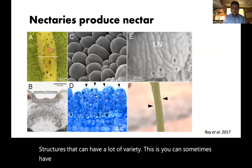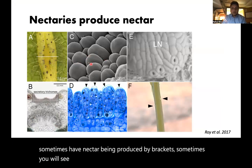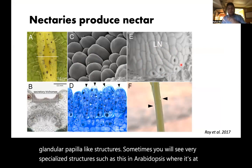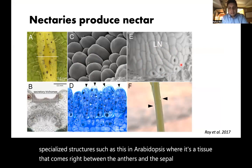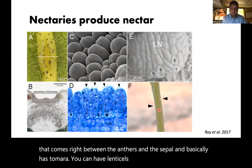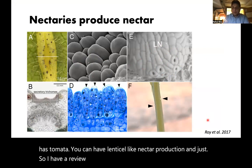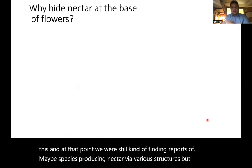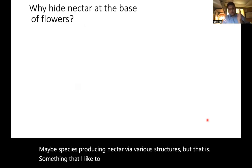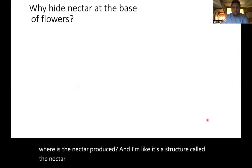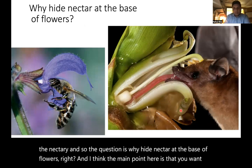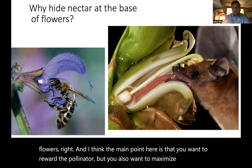You can sometimes have nectar being produced by bracts, sometimes glandular papilla-like structures, sometimes very specialized structures such as in Arabidopsis, where it's a tissue that comes right between the anthers and the sepal. I have a review from 2017 — the last time we reviewed this — when we were still finding reports of various species producing nectar via various structures. Many people ask me where nectar is produced — it's a structure called a nectary. The question is why hide nectar at the base of flowers. The main point is that you want to reward the pollinator, but you also want to maximize the brushing off of pollen on them.